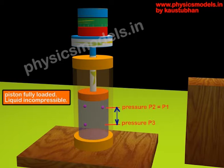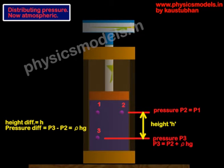Since the liquid cannot be compressed, the piston will increase the pressure inside the liquid, but the liquid column will not get any smaller. The difference in height between point three and point two has not changed, so the points are relatively at the same distribution.